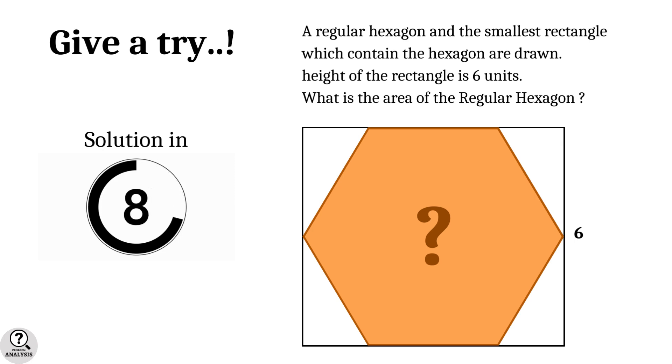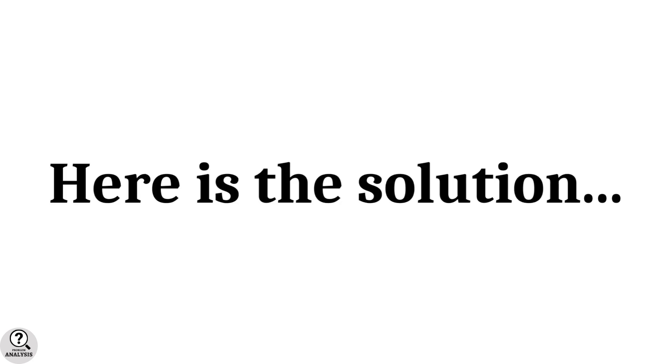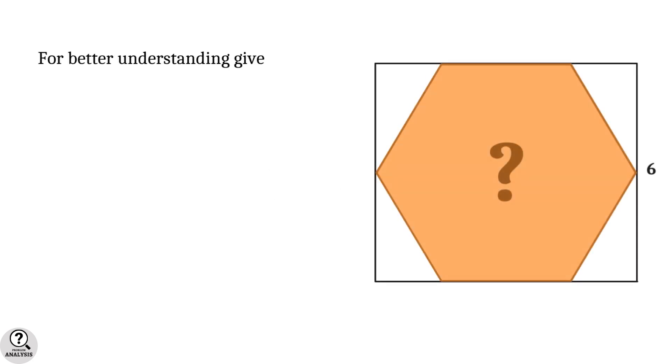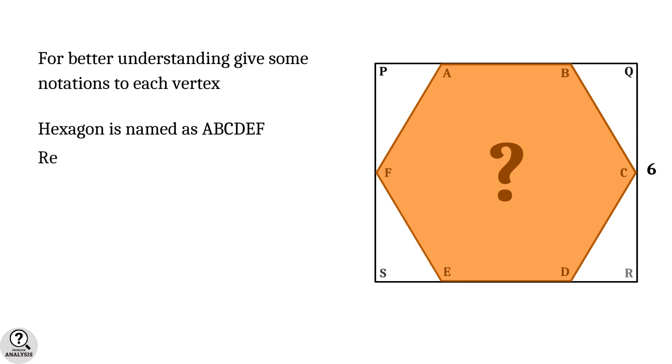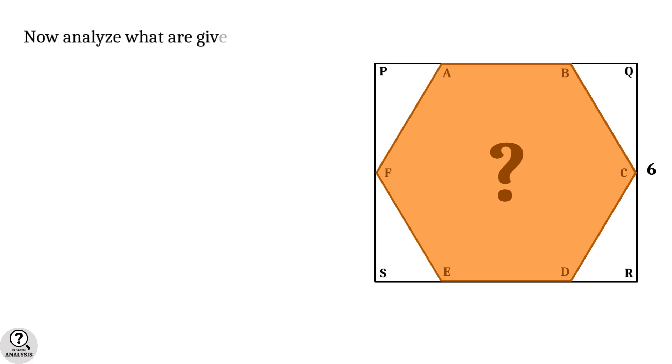For better understanding, let's give some notations to each vertex. The hexagon is denoted by ABCDEF and the rectangle is named as PQRS.